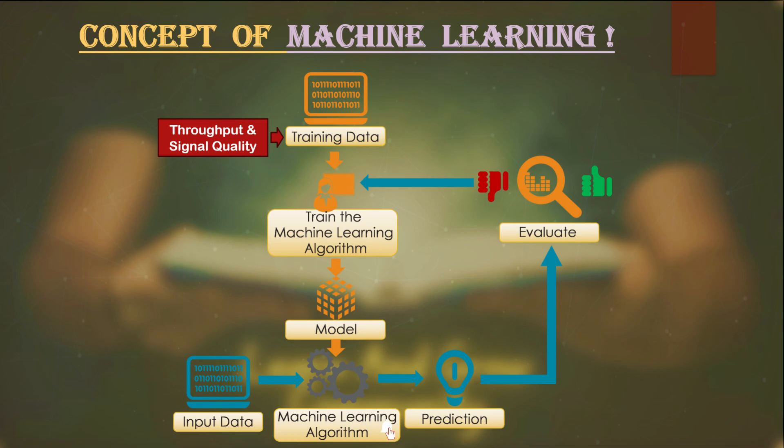So once this machine learning model is developed, which actually knows how the throughput is affected by the signal quality, then this model can be used in any RAN system to predict what would be the possible throughput for any specific signal quality. This is just one function and this is a very simple idea. However, as a network engineer, you know that throughput is not only dependent on one factor, so other factors are also equally important.